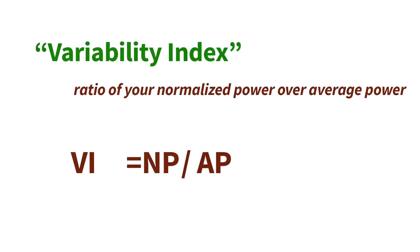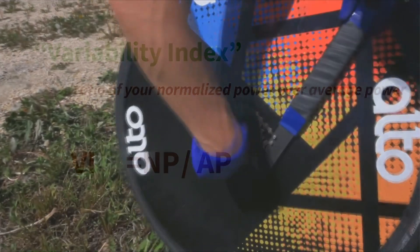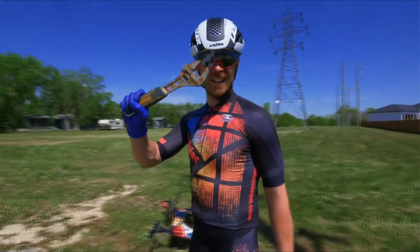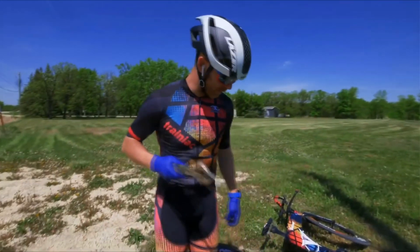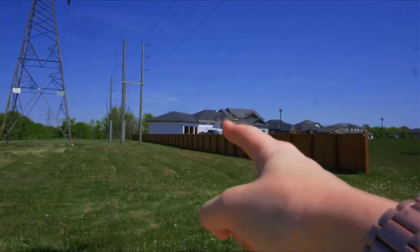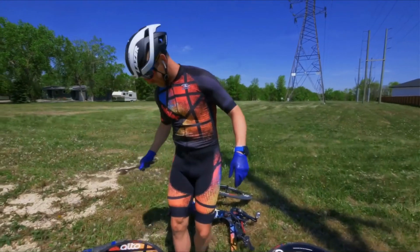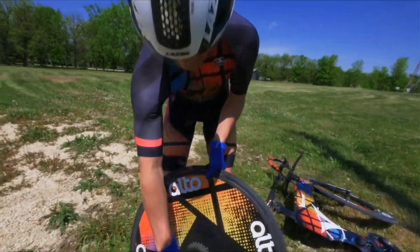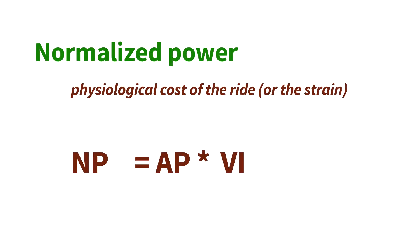What is Normalized Power? There is a formula — Andy Coggan invented it. It involves a 30-second rolling average, raising the power to the fourth power, averaging the resulting values, and then routing it back. But what does it actually mean? Normalized Power essentially represents the physiological cost of that ride — kind of like the strain on you.